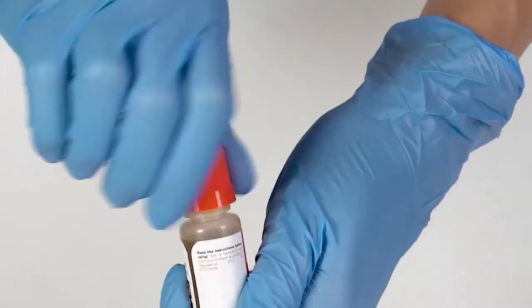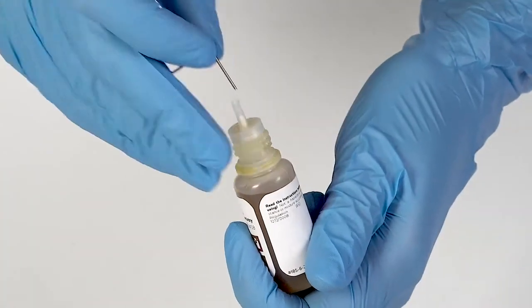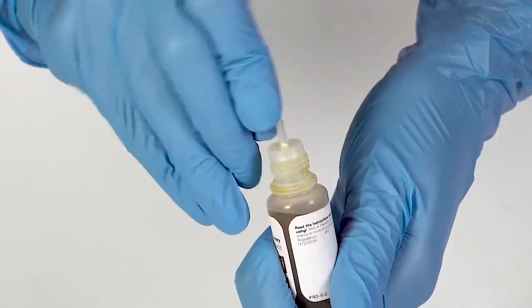To open a bottle containing a reagent, push the cap down and turn it. Pierce the bottle nozzle with an unbent paper clip.